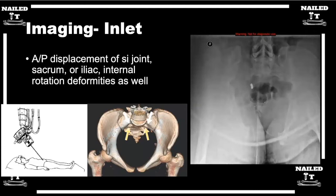Looking at an inlet — and if you have a 3D reconstruction, you can turn it so it's an inlet — what are some of the things that you pay attention to on an inlet image? Look at the joints and the disruptions, and if there are any fracture lines that you can follow, look at those. The other thing that the inlet will show you in particular is the rotational moment. If you look at the iliac spines and their profiles and compare them, if they're asymmetric, then there's generally a rotational moment involved with the displacement.